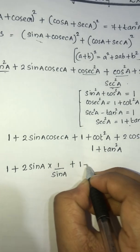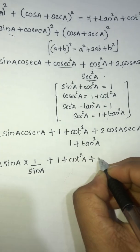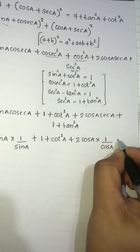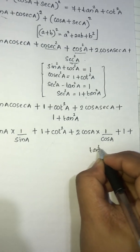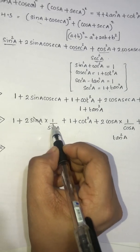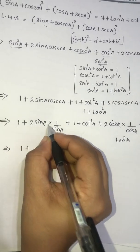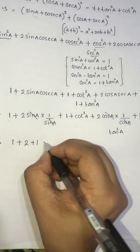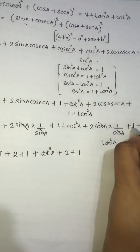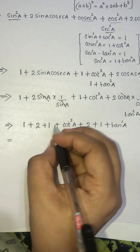Now, 2·cosA·secA equals 2·cosA·(1/cosA) which equals 2, and 2·sinA·cosecA equals 2·sinA·(1/sinA) which equals 2. Then 1 + cot²A plus 1 + tan²A plus 2 plus 2 gives us: 1 plus 2 is 3, and 3 plus 1 is 4.